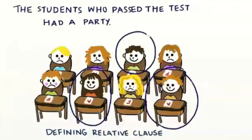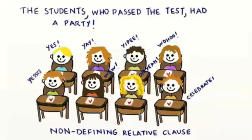'The students who passed the test had a party.' Here, the students who passed the test — not all students — had a party. In a non-defining relative clause version, all the students passed and all had a party.